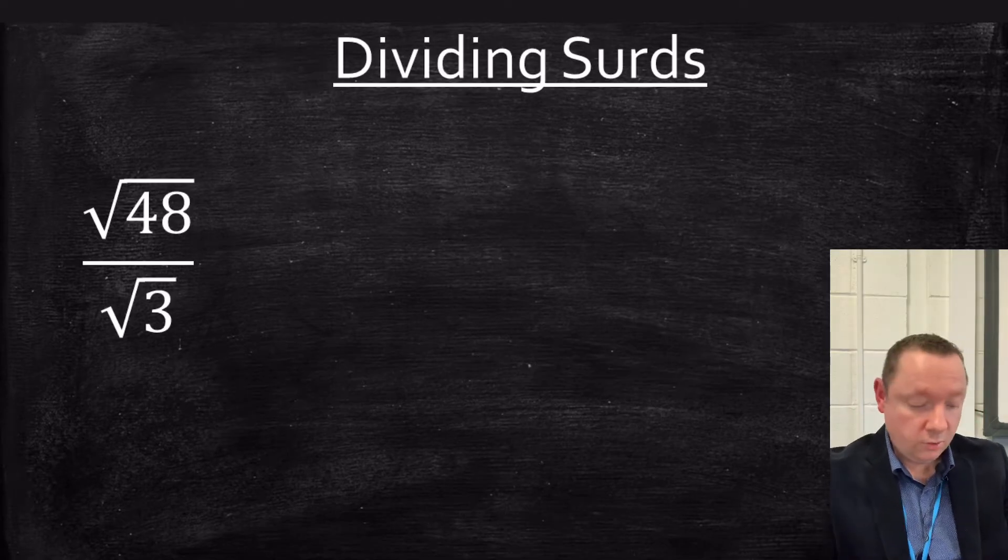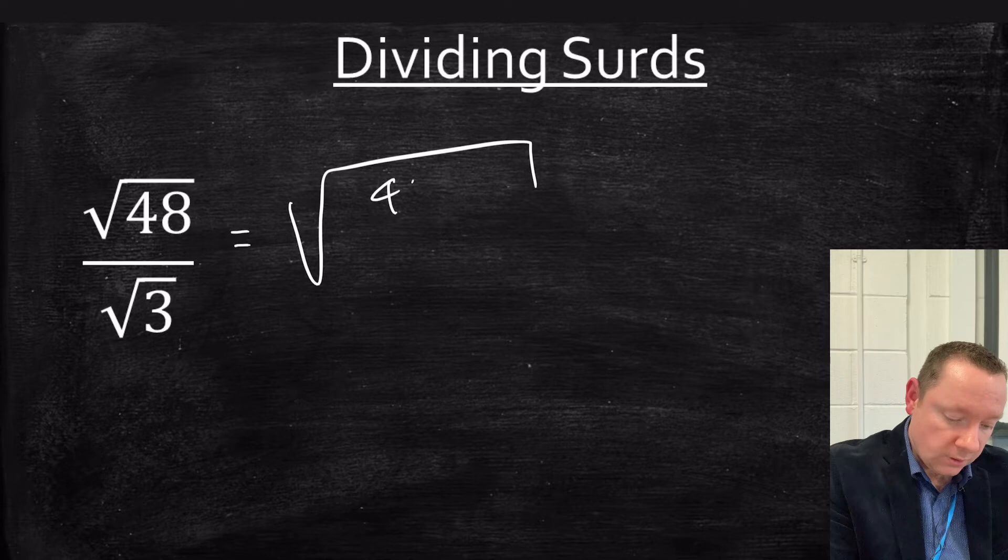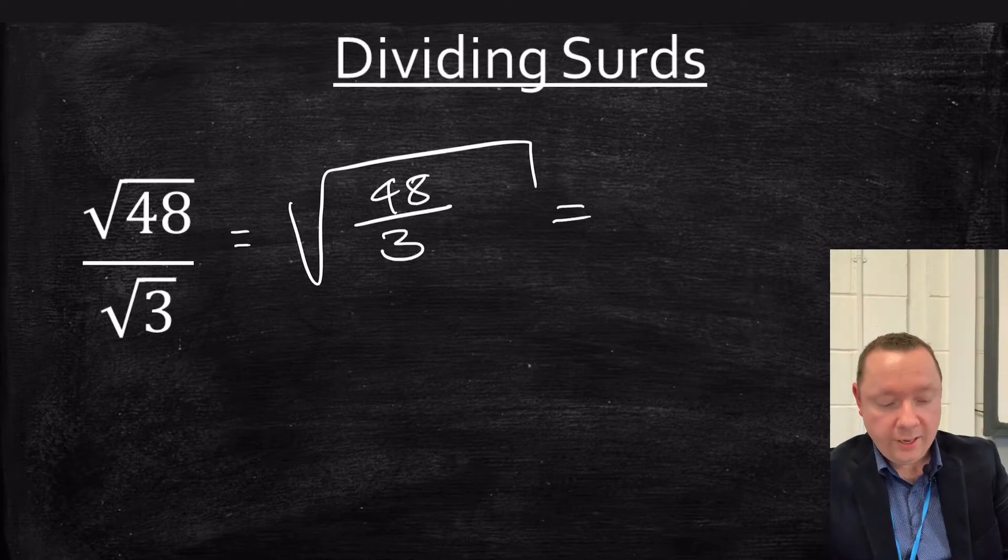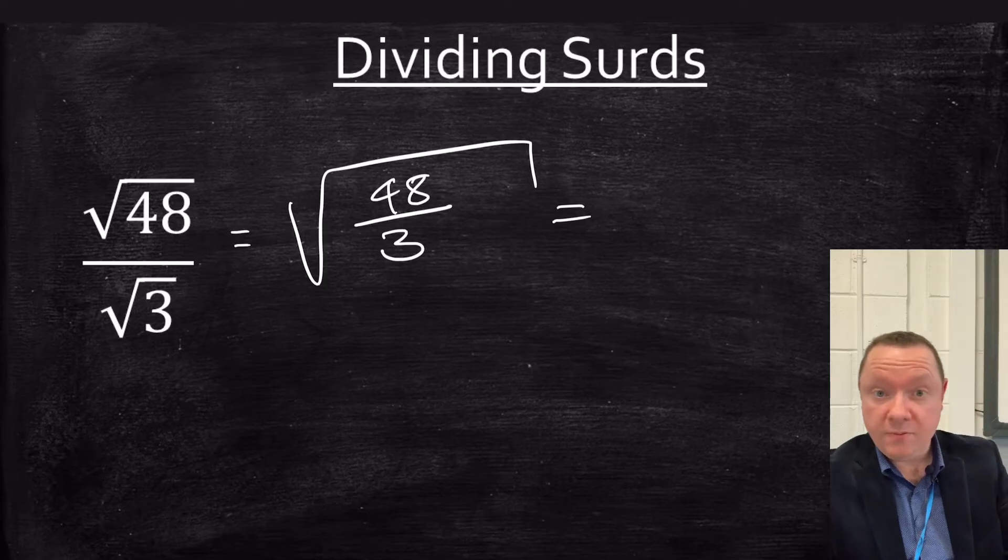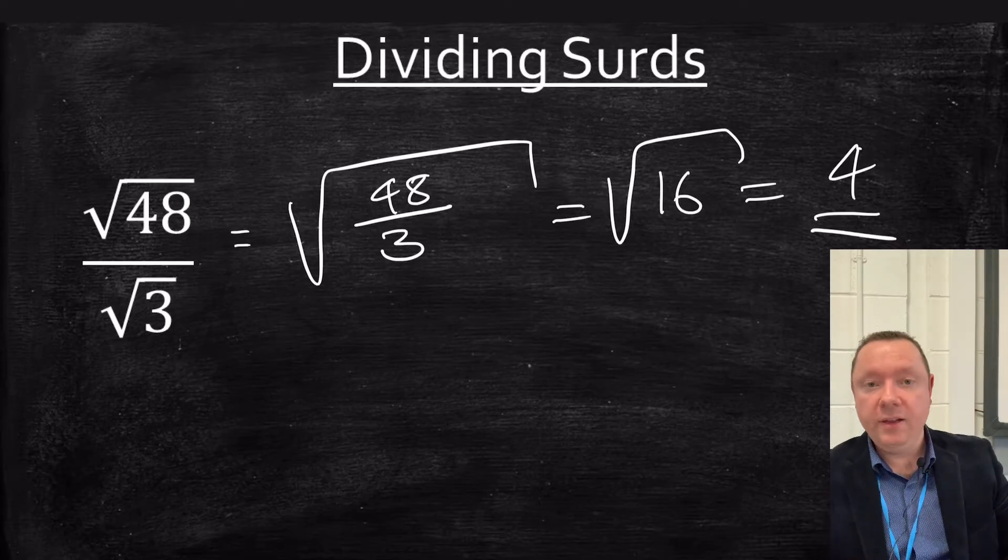Dividing surds. If you've got a square root divided by a square root then that's the same as doing one square root with the numbers divided by each other. So the square root of 48 divided by 3. Well 48 divided by 3 is 16. So we've got the square root of 16 which in this case is just 4. You simplify at the end which in this case is a whole square number.